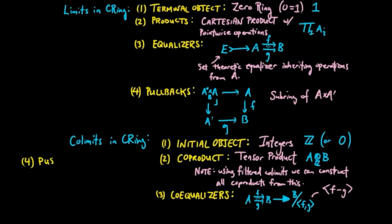And finally, for push-outs given two ring morphisms, F and G, we can think of these as giving B and B' commutative algebra structure. And so we can take their tensor product over A, and that gives us the push-out of B and B'.